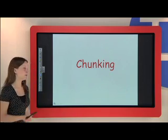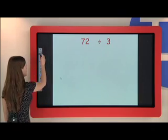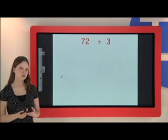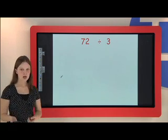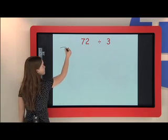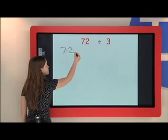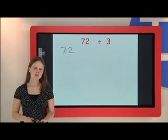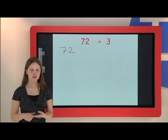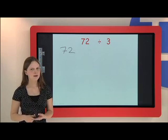I'm going to start with an example. I'm going to start with 72 divided by 3. So I start by writing 72. And I think to myself, what's the biggest and easiest number in the 3 times table that I can take away from 72?